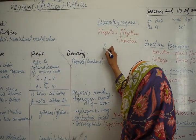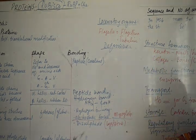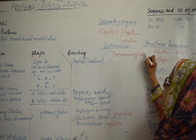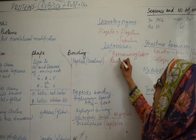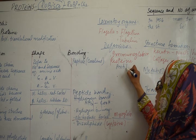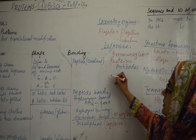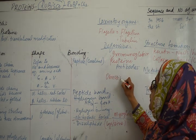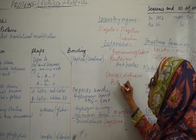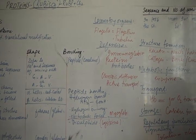An important function is the defensive function. Defensive functions are performed by immunoglobulin proteins, which are antibodies. Membrane proteins are also important for transport processes such as osmosis, diffusion, and active transport.